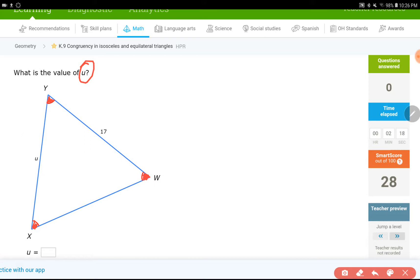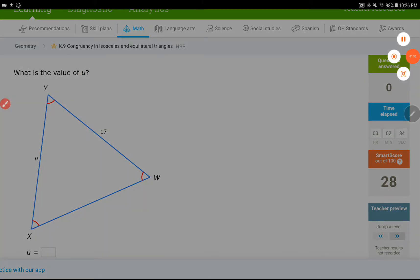Which means all of the angles are the same. If all of the angles are the same, all of the sides are the same. Which leads us to U being equal to 17, which is that side. And also this side, XW would be 17 as well. So let me pause the video. I will then move on to the next level and see what kind of question that one is.